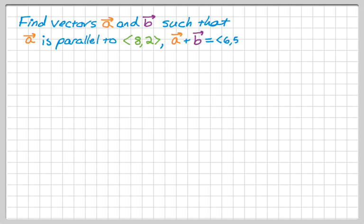So I want to find two vectors a and b such that the following things are true. The first thing I want is that a is going to be parallel to a particular given vector, and that vector is <8,2>. a + b is going to be <6,5>, and then also I want a and b to be orthogonal, which means they form a right angle, their dot product is 0.